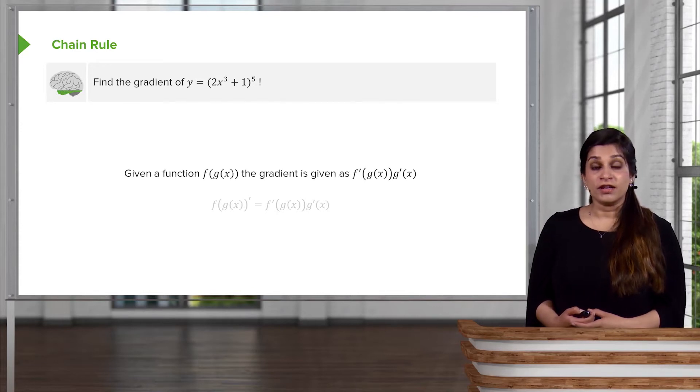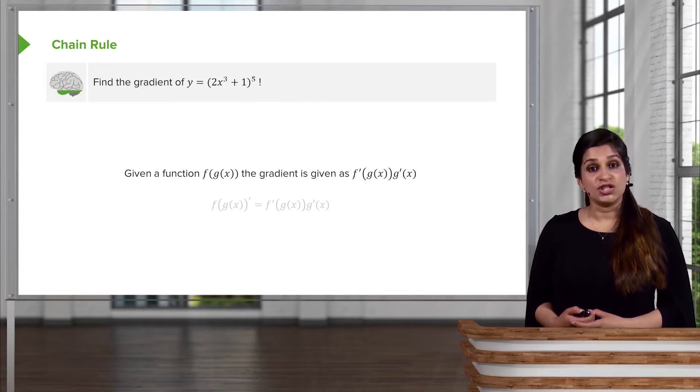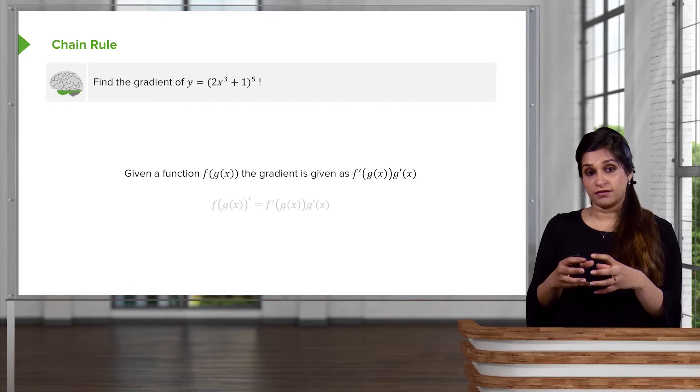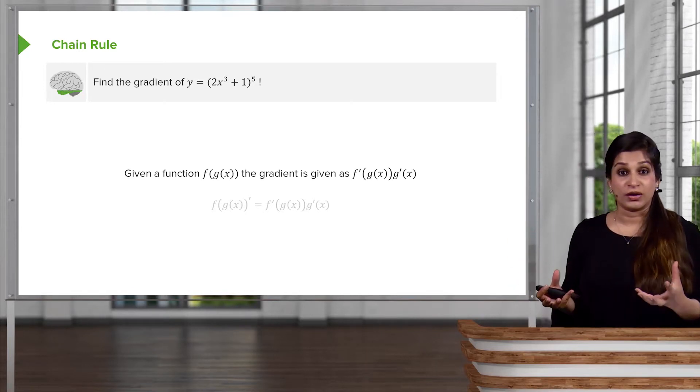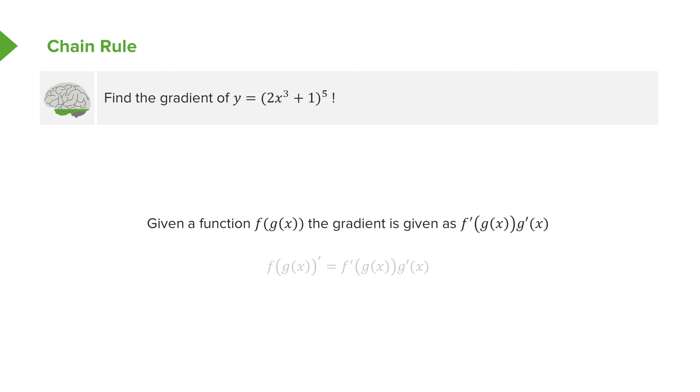So, given a function f(g(x)), so you have g(x) as a function which is within another function, which we are calling f. The gradient of this function can be given as f differentiated as a whole, so you differentiate the outside function, and then you differentiate the inside function, g(x).